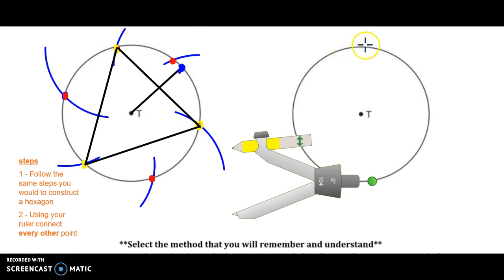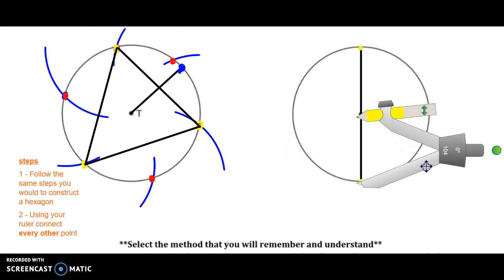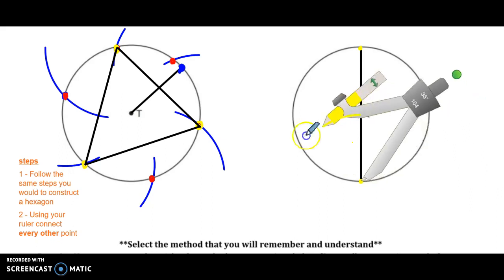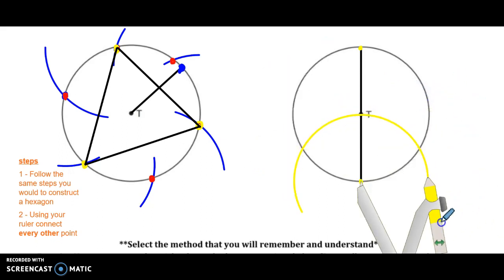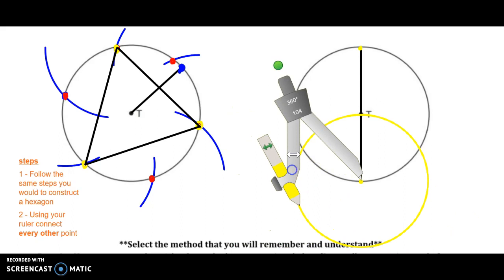So the diameter goes from one end of the circle to the other through the center. What we're going to do now is use the compass to measure the radius. Okay, so here's my radius and I'm going to make an arc. You can make a full circle if you'd like, up to you really.